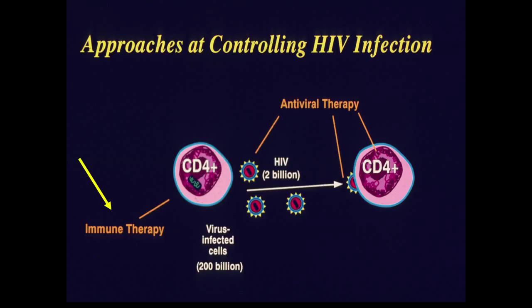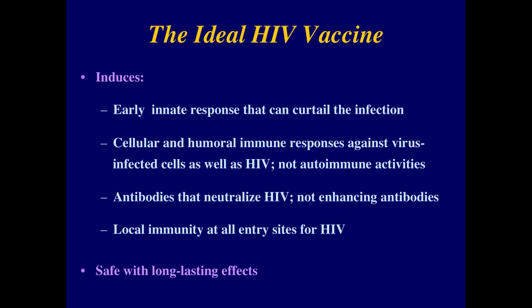When controlling HIV infection, we have very good antiviral therapy available to most infected people when they need it. But it would be very helpful if we could boost the immune system in these individuals to bring them back to the state of long-term survivors. What is needed for a vaccine is one that induces a very early response to stop the virus from spreading in the body, has both cellular and humoral antibody responses, has antibodies that neutralize the virus well, works locally, and is safe.